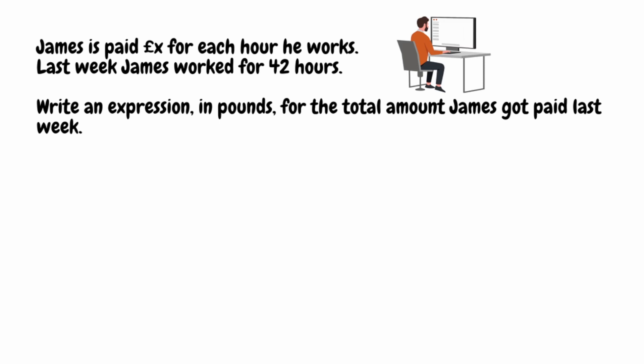For this question, we've got: James is paid x pounds for each hour he works. Last week, James worked for 42 hours. Write an expression in pounds for the total amount James got paid last week. As I said at the beginning, it can be useful to try a value for our variable. So instead of x pounds, let's say he gets paid £10 an hour. We take the number of hours worked, which is 42, and multiply by £10 per hour, giving us £420. That tells us we need to multiply them together.